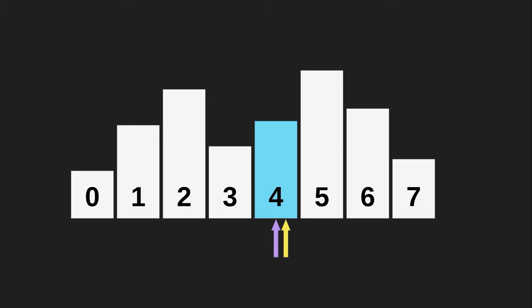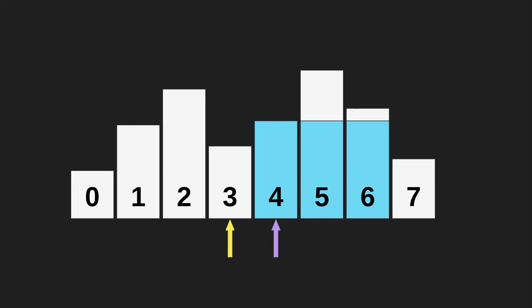What if instead of having the second loop start from the beginning, we start it from the current position and try to extend the current bar forward? For bar four, we extend it to bars five and six, then come back and try to extend backward into bar three — but bar three is smaller, so we can't. This works, but it's basically splitting our second loop into two parts: going forward and then backward. This is O(n²) complexity. It works, but I don't want to compute that backward information twice — maybe we could store it somewhere.